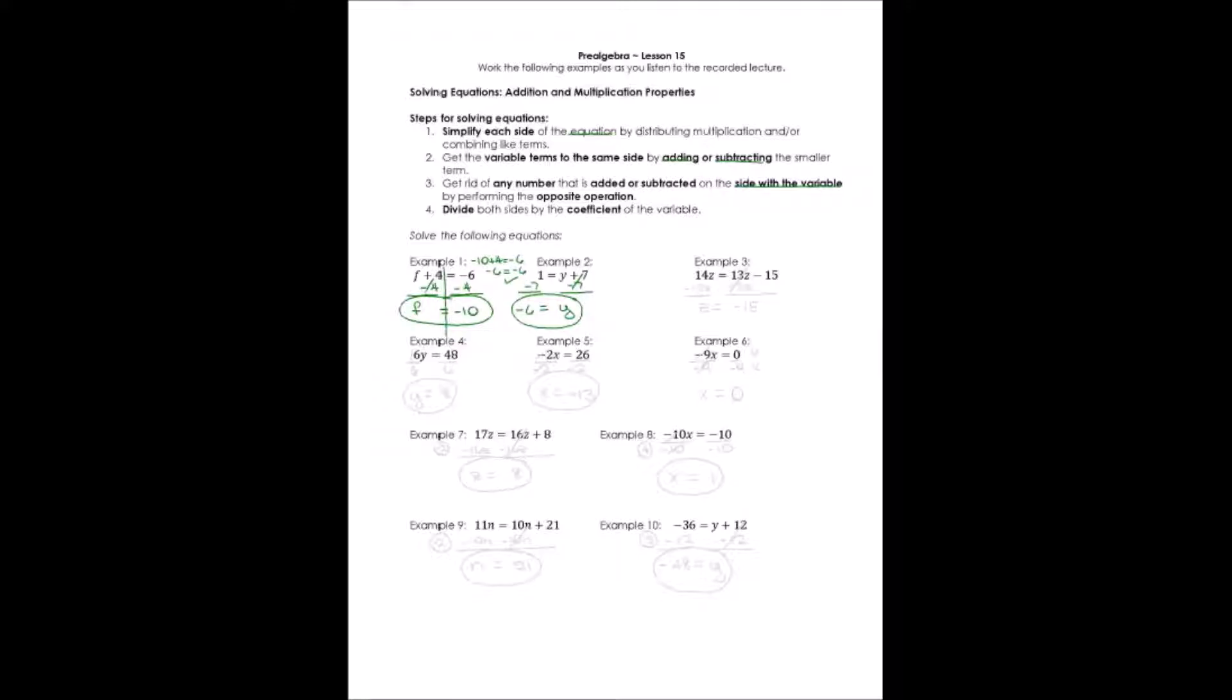All right, let's look at example number three. We have 14z equals 13z minus 15. We don't have to simplify on both sides, but we do need to get the variable terms to the same side. Step number two is where we're beginning with this one. We need to get all of the z's together. What do we do? We begin on the side that has the smaller number of terms. In other words, let's start over here with this 13z. Since it's positive 13z, we're going to subtract it. We'll do the opposite. I'll subtract it, and I have to do the same thing to both sides of the equation.